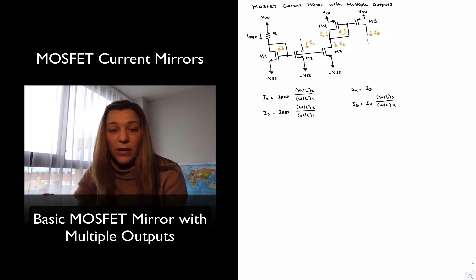For the transistors that have the diode connections, we know they're going to be forced into saturation just because of the connection. For example, in the case of M1, we have that VDS is going to be equal to VGS and therefore is greater than VGS minus VT,